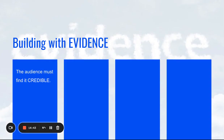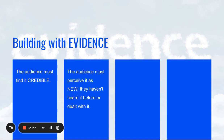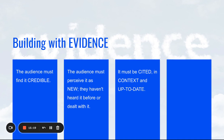When building with evidence, your audience must find you credible and must find your evidence credible. They must perceive it as new information. Using the most up-to-date information is crucial for your audience. Evidence must be cited in context — as you state facts and statistics, include your citation so the audience knows where the information came from and how recently it was gathered. Visual aids can also help with persuasion, especially when presenting data, statistics, and quantitative evidence.